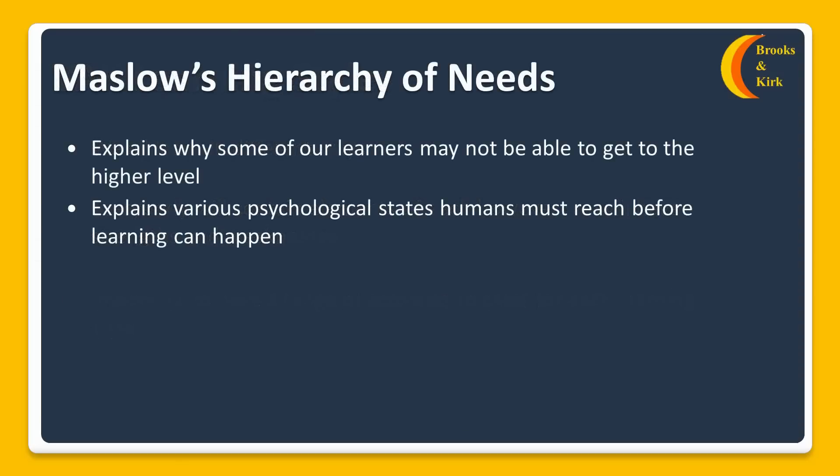The next theory is Maslow's Hierarchy of Needs. What it does is explain why some of our learners may not be able to reach the higher levels of cognitive thinking skills that we're after. It explains the psychological states that we as human beings must reach before learning can take place.